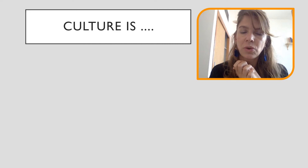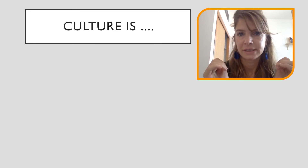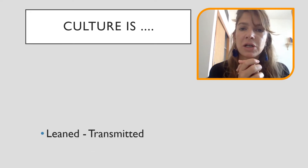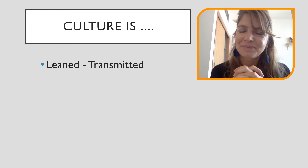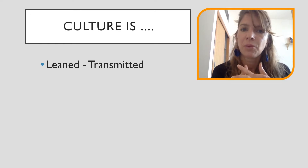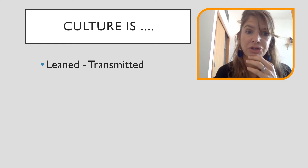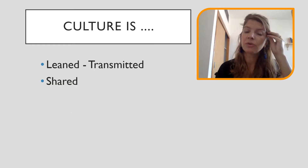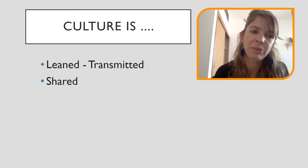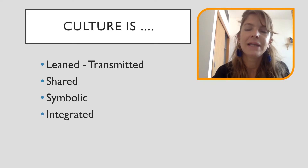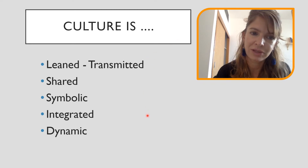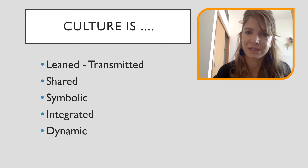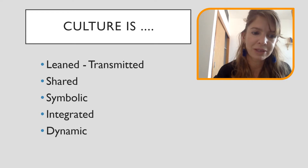Culture has different characteristics or components. First, culture is learned and transmitted — it's not something we were born with. Then, culture is something that is shared; we don't have a culture on our own, we share it with other people. It is also symbolic, integrated, and finally dynamic. For each of these five components I have a slide, so let's start with the first one: culture is learned.